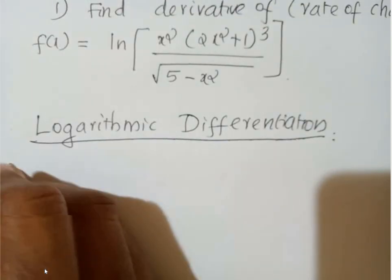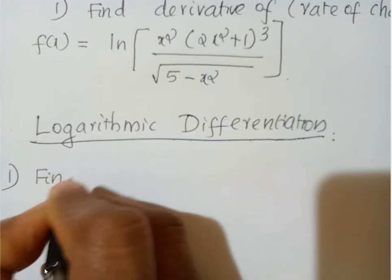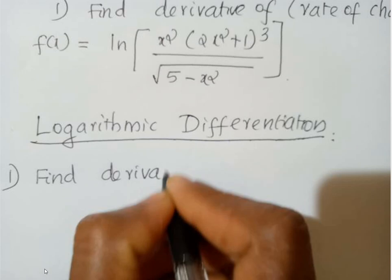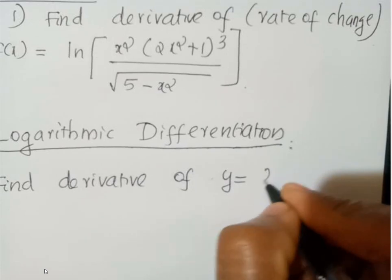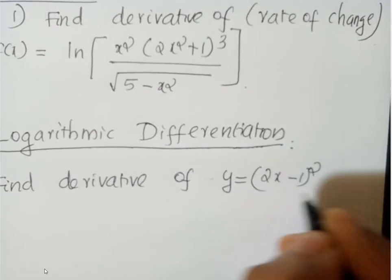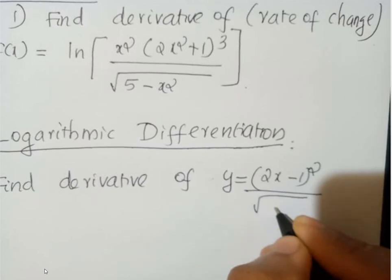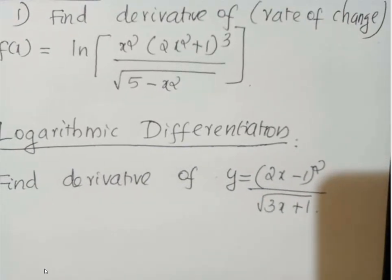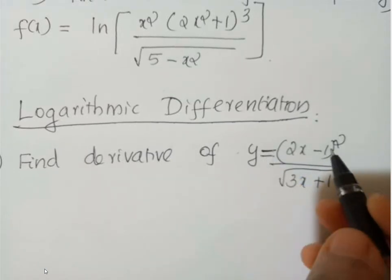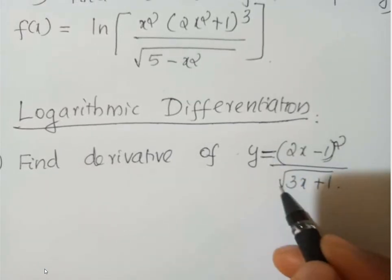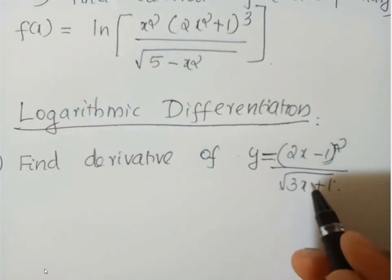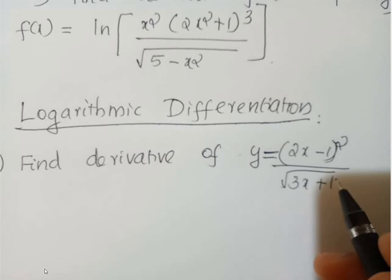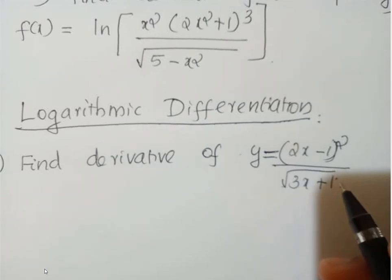Find the derivative of y = (2x − 1)² / √(3x + 1). Here the numerator is raised to 2 and the denominator is raised to 1/2. In this type of logarithmic differentiation, if you apply logarithm to this function, you can find the derivative very easily.